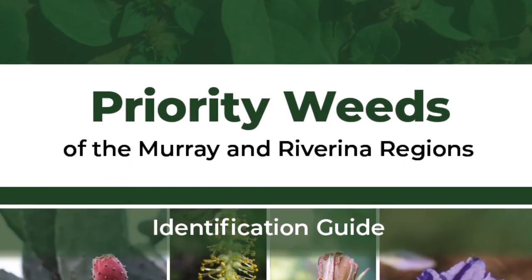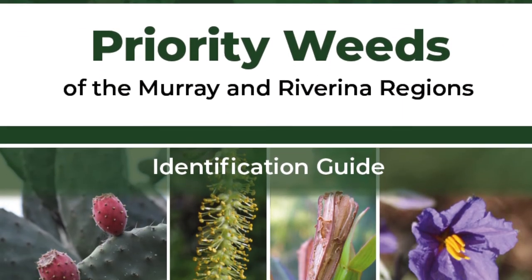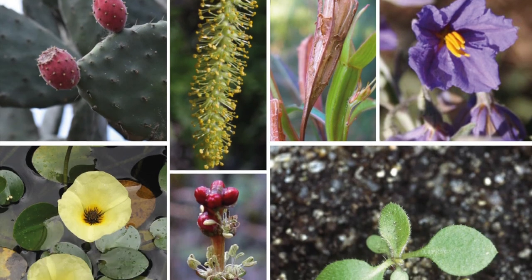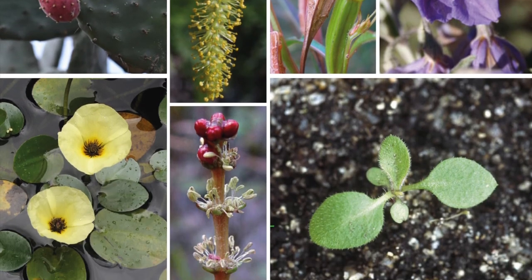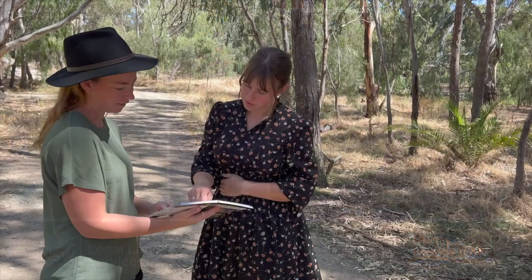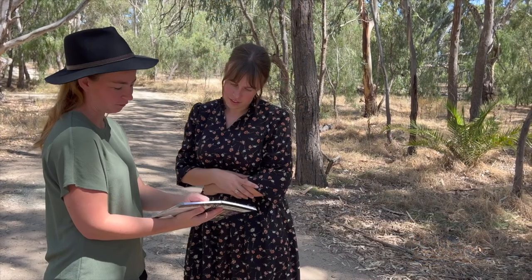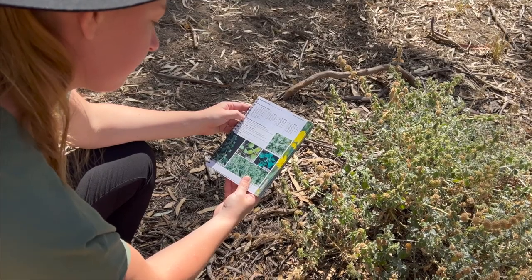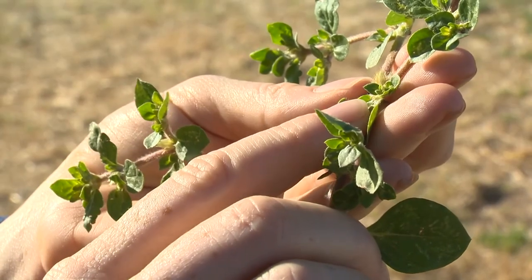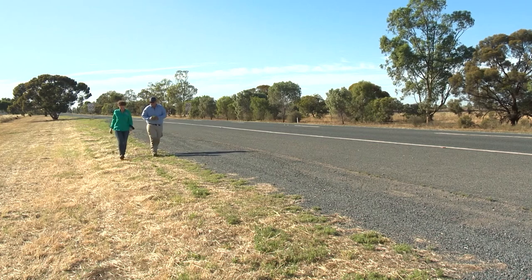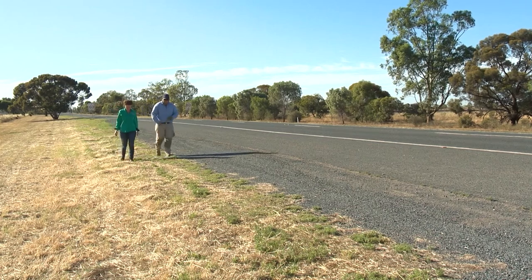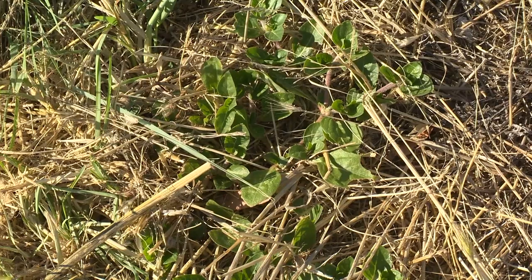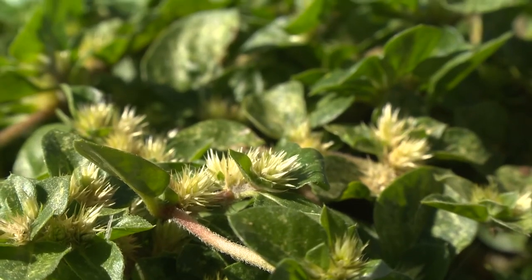The Murray and Riverina Local Land Services Regional Committees have recently updated their Priority Weed Identification Guide. The purpose of this guide is to provide basic information to help with the identification and management of weed species that are listed as priority weeds within the Murray and Riverina Regional Strategic Weed Management Plans.